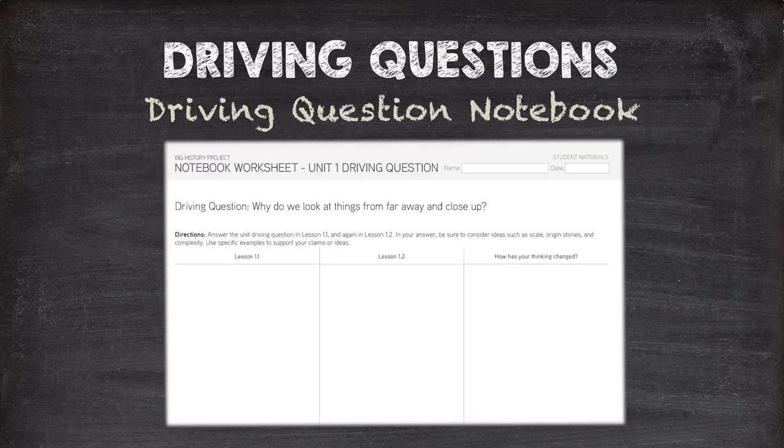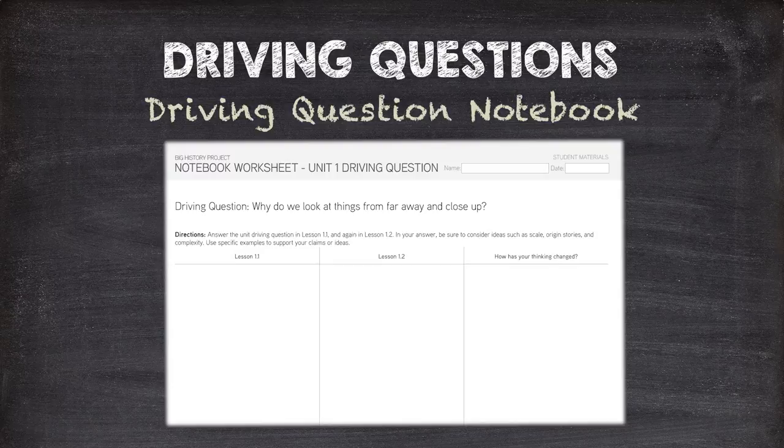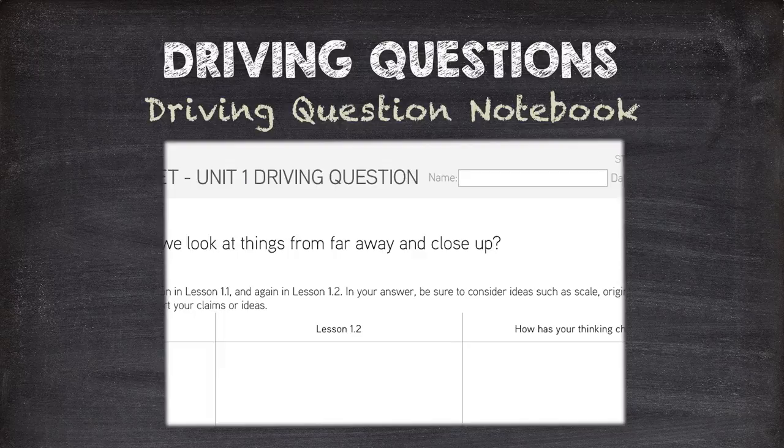Students use the DQ notebook to capture their initial thinking and make conjectures about the driving question. The opening entry hooks students into the content and helps them think about the videos and articles that come later. Later on in the unit, students get to revisit their conjectures using evidence from the text they've read, to track how their thinking has changed. It's useful to ask students how the text supported, deepened, or challenged their thinking.